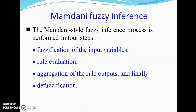Mamdani Fuzzy Inference involves four distinct steps. The first is fuzzification of the input variables, as already learned from basic fuzzy inference architecture. The second step is rule evaluation. The third stage is aggregation, corresponding to the aggregator building block in the fuzzy inference model. The fourth step is defuzzification.